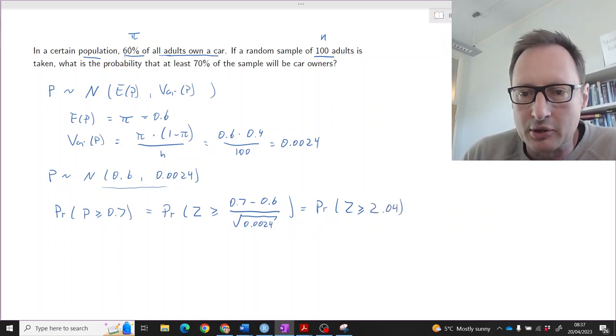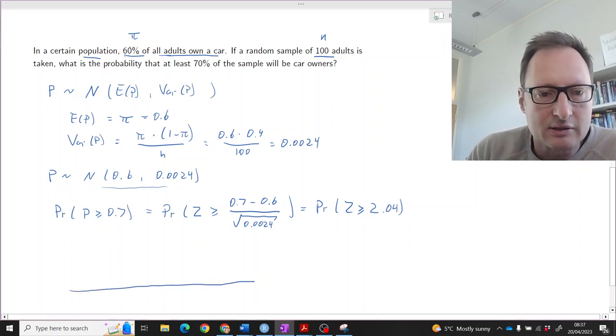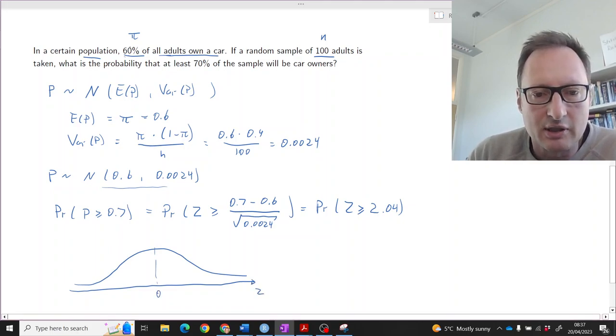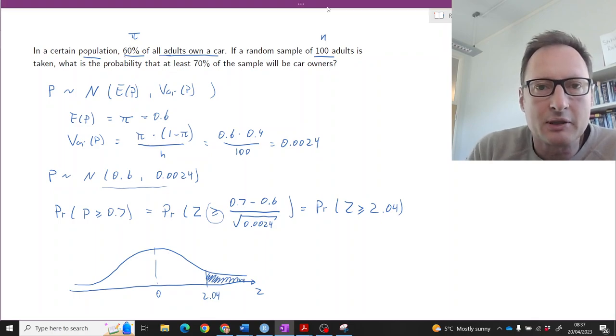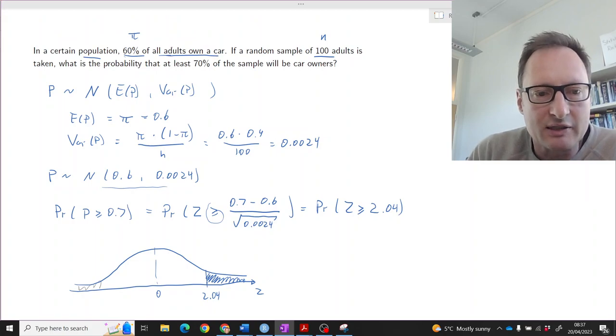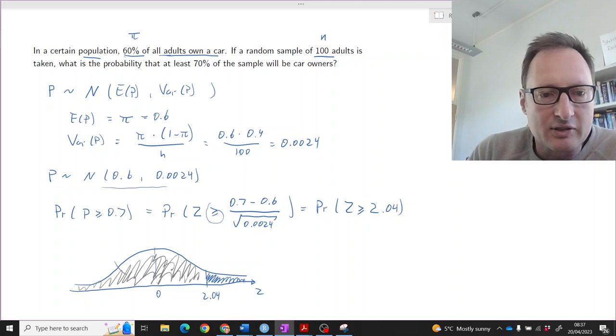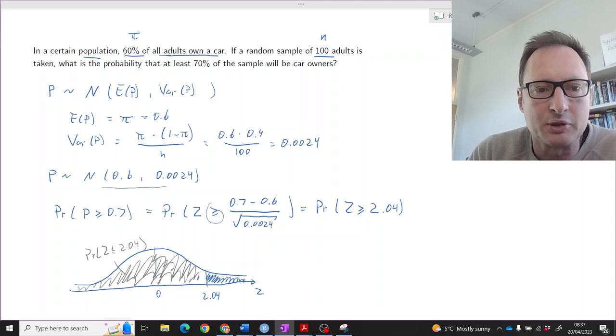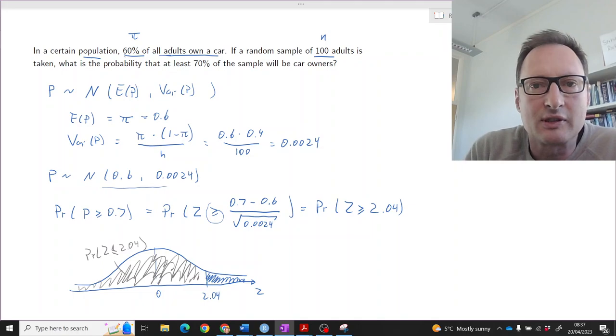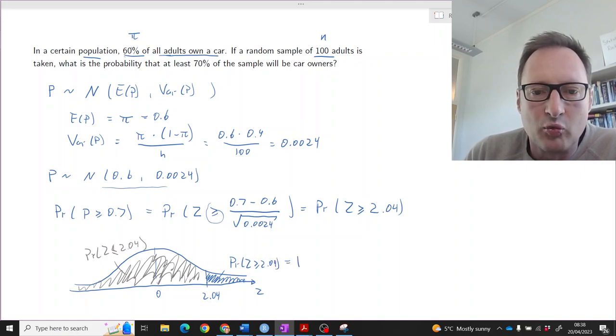So we can sketch that with a little sketch of the standard normal distribution, which is centered around 0. So 2.04 is somewhere here. We are interested in the probability of larger or equal, so we are interested in this probability. If we look at the table, we know that the probability which we find in the table is going to be this probability. That is the probability that Z is smaller or equal to 2.04. Remember, it's a continuous distribution, so the equal sign doesn't really change anything. And this is just 1 minus that gray probability, which we can read off the table.